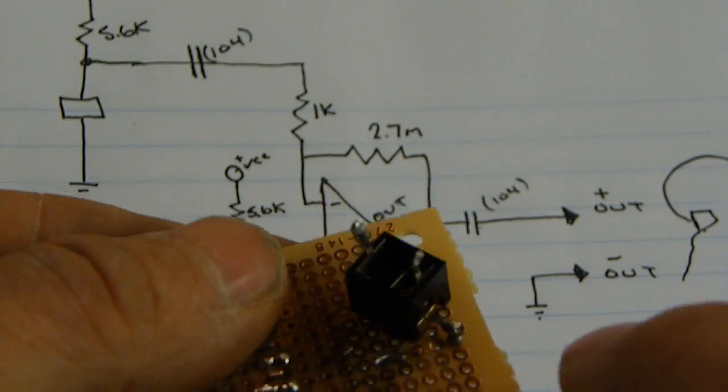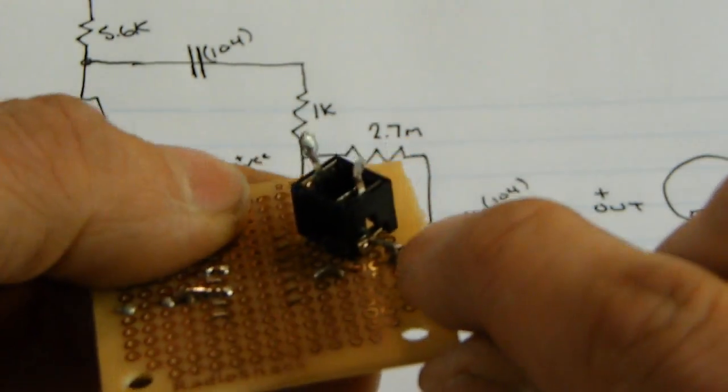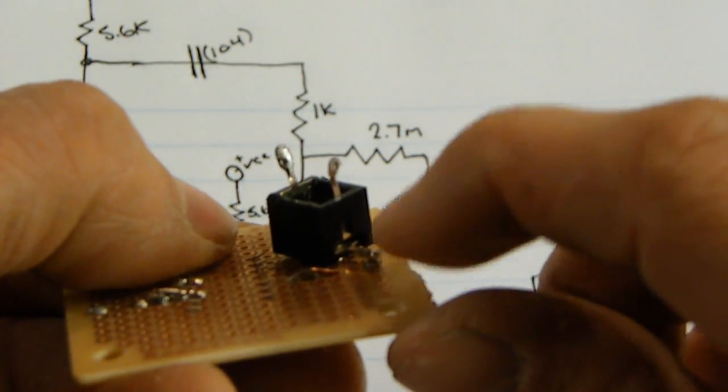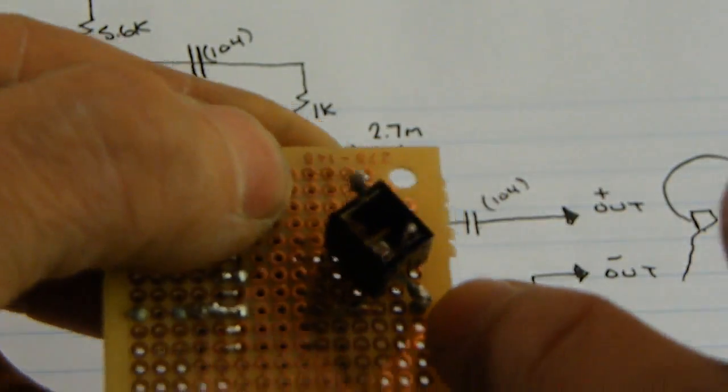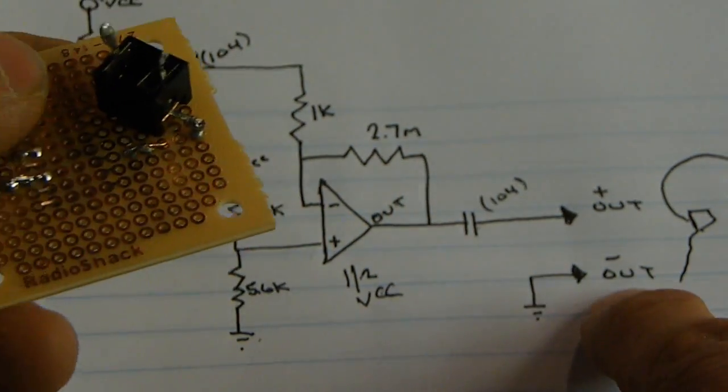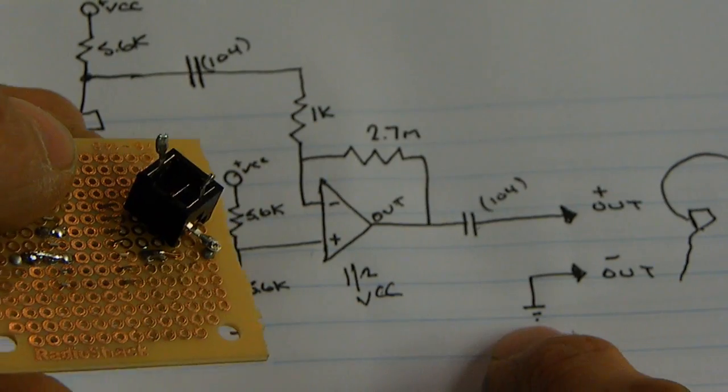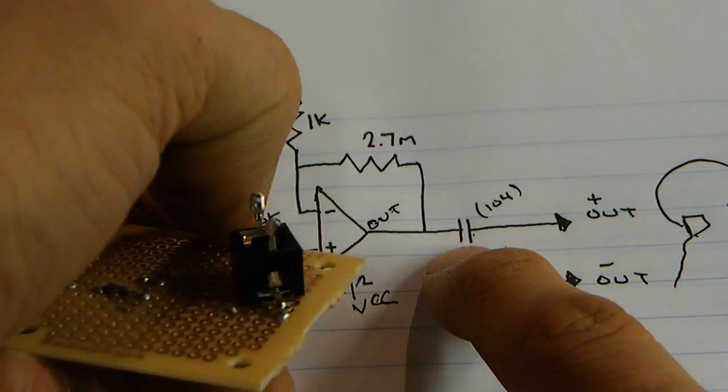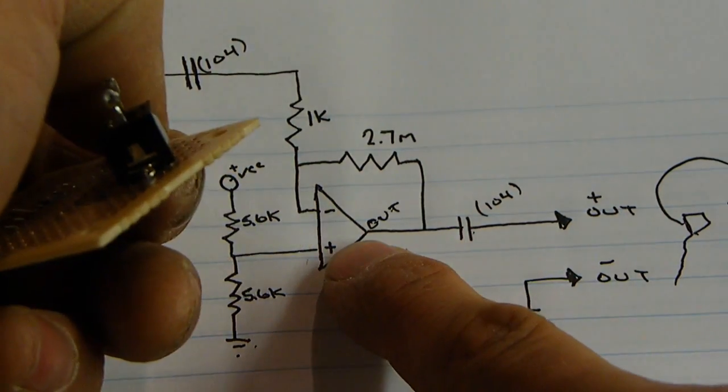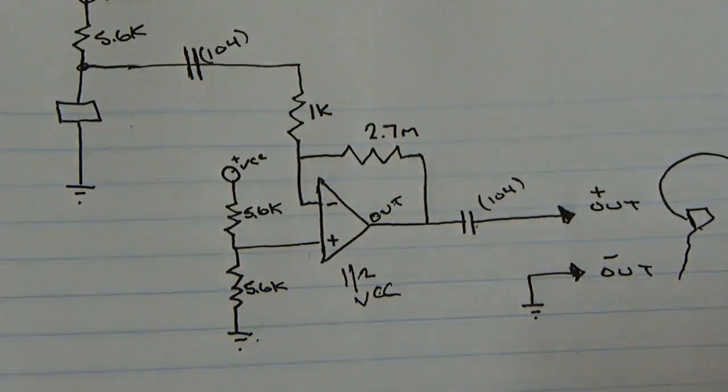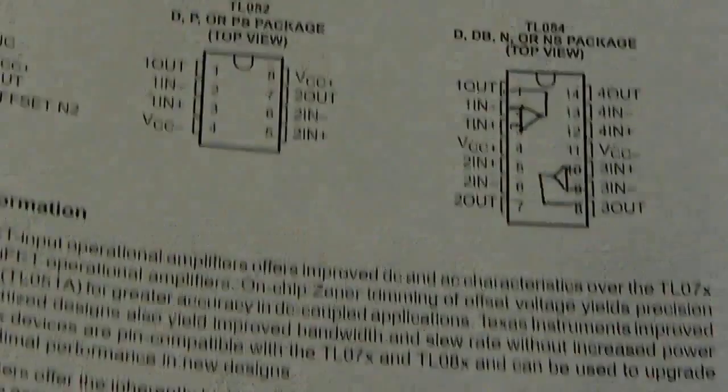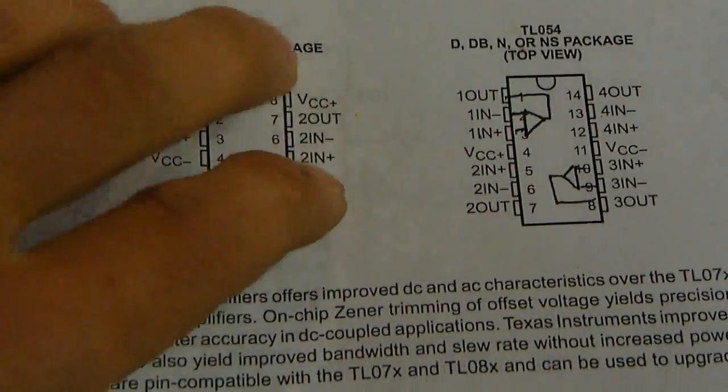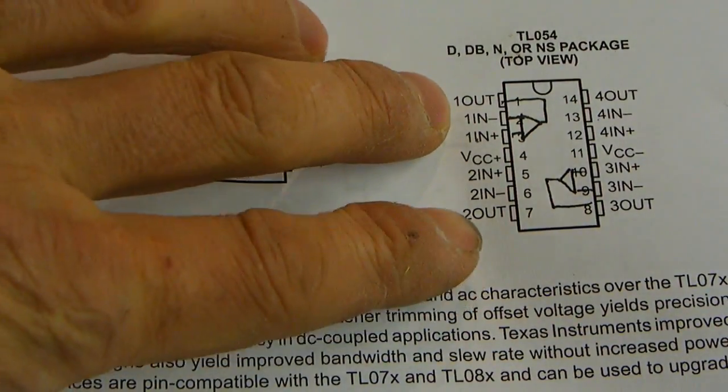And I drilled the hole now for the headphone jack. And I just basically made it to where the negative on the headphone jack is going to be touching the negative rail as per the schematic.